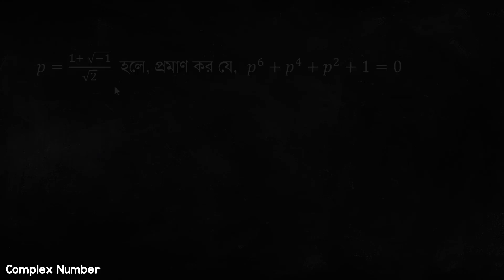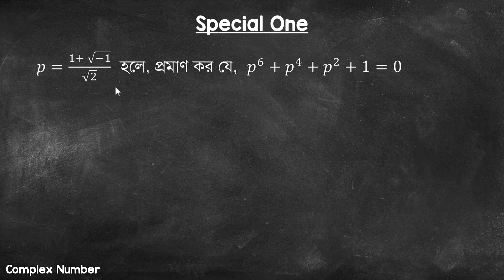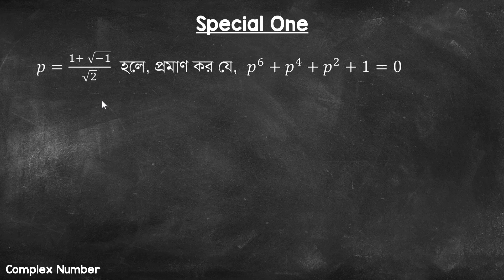This class is the same. You will think of it as a pair value. You will see your method in a match. The pair value is 1 plus i times i divided by root 2.